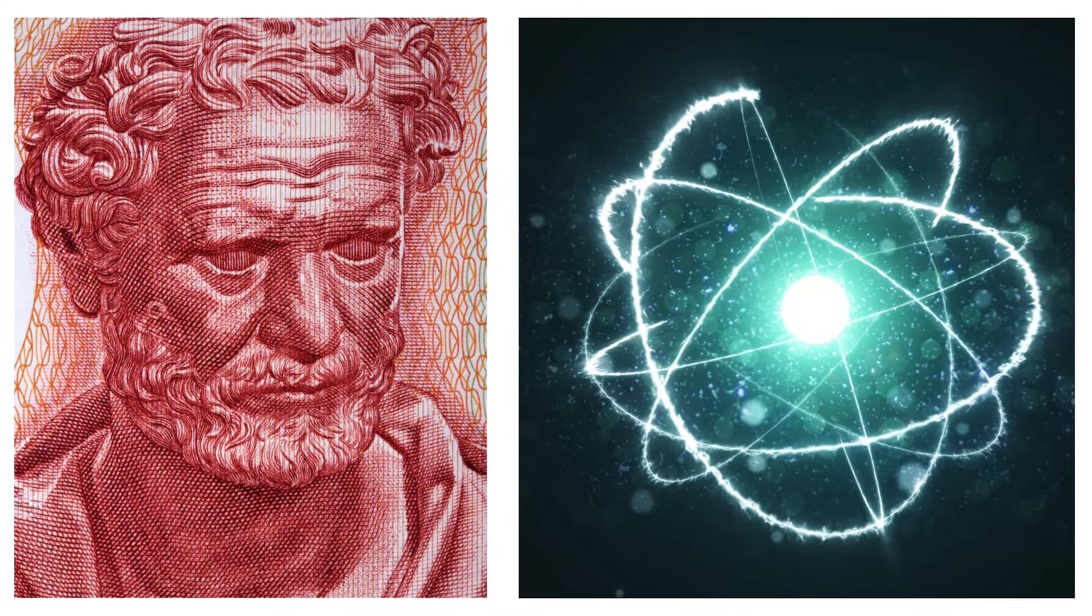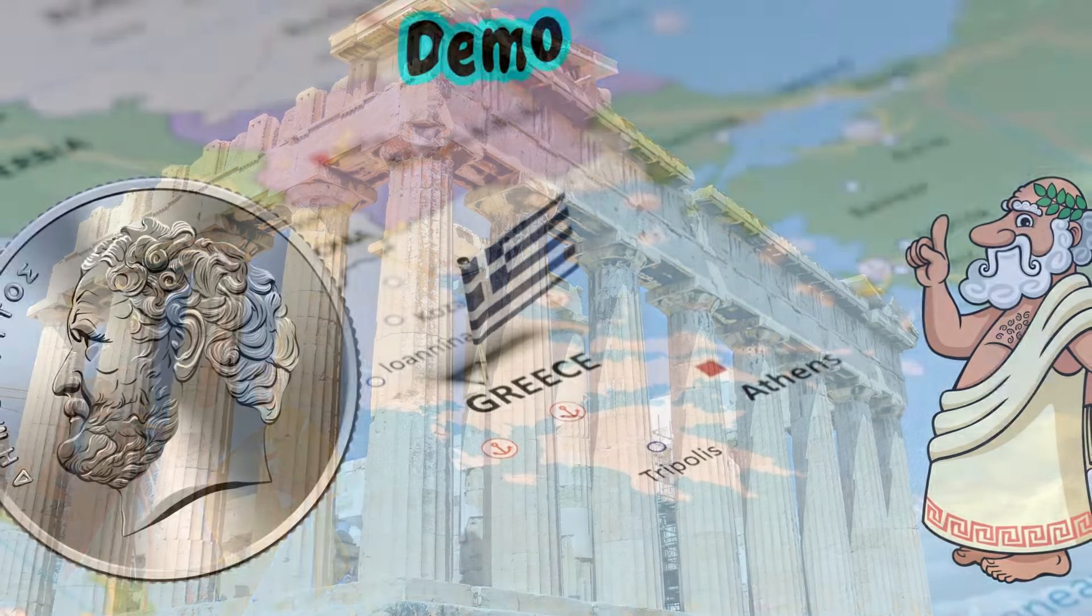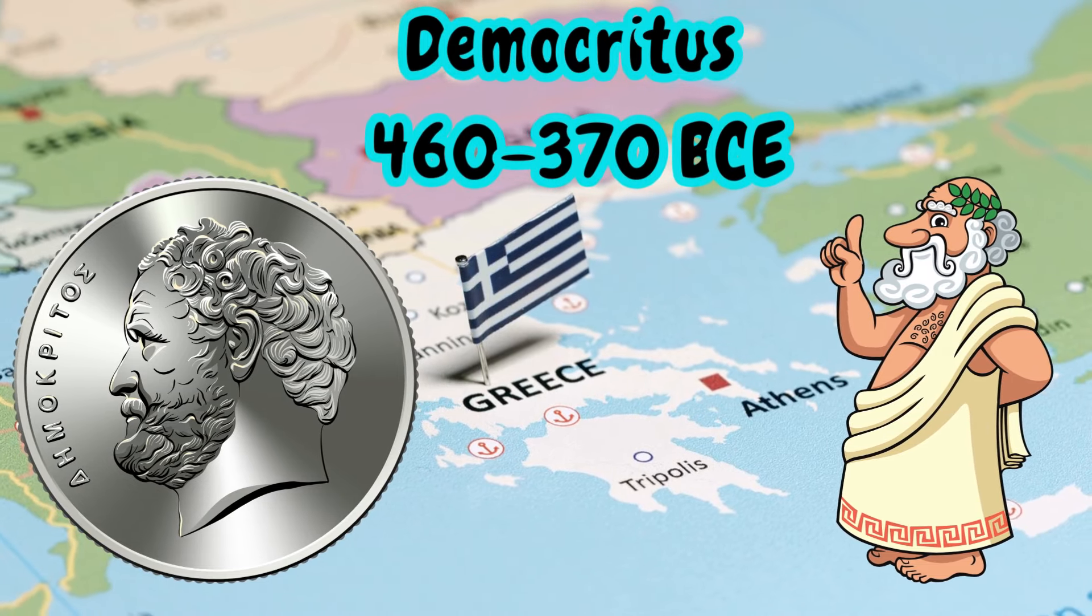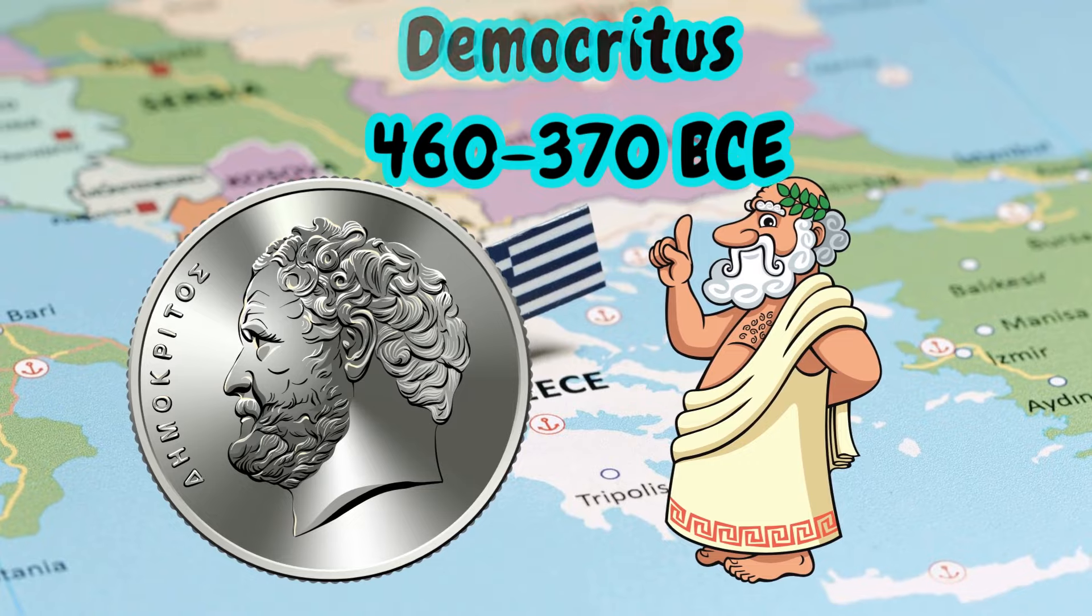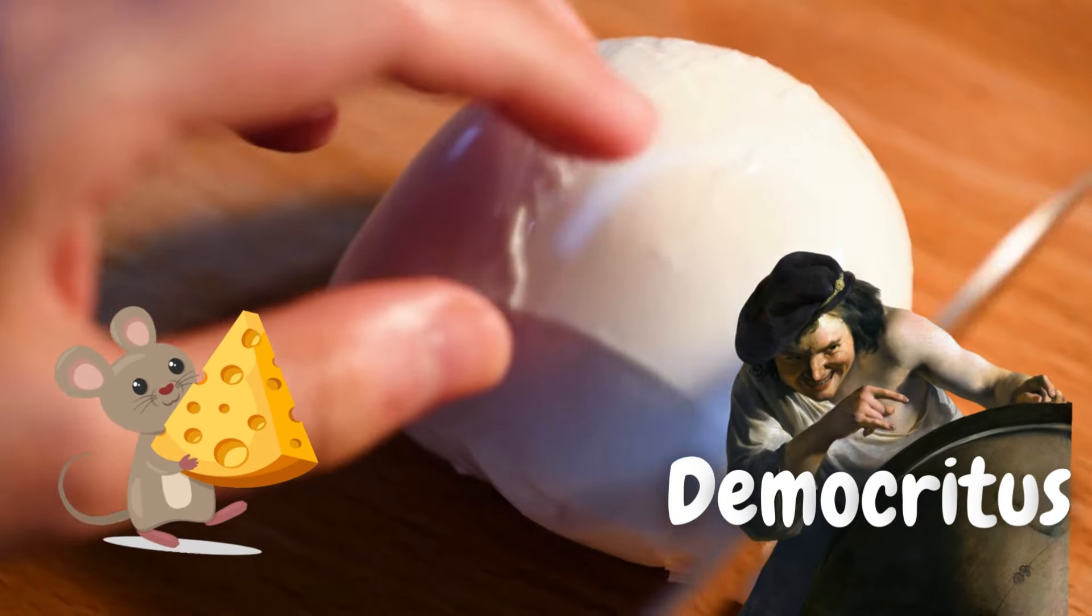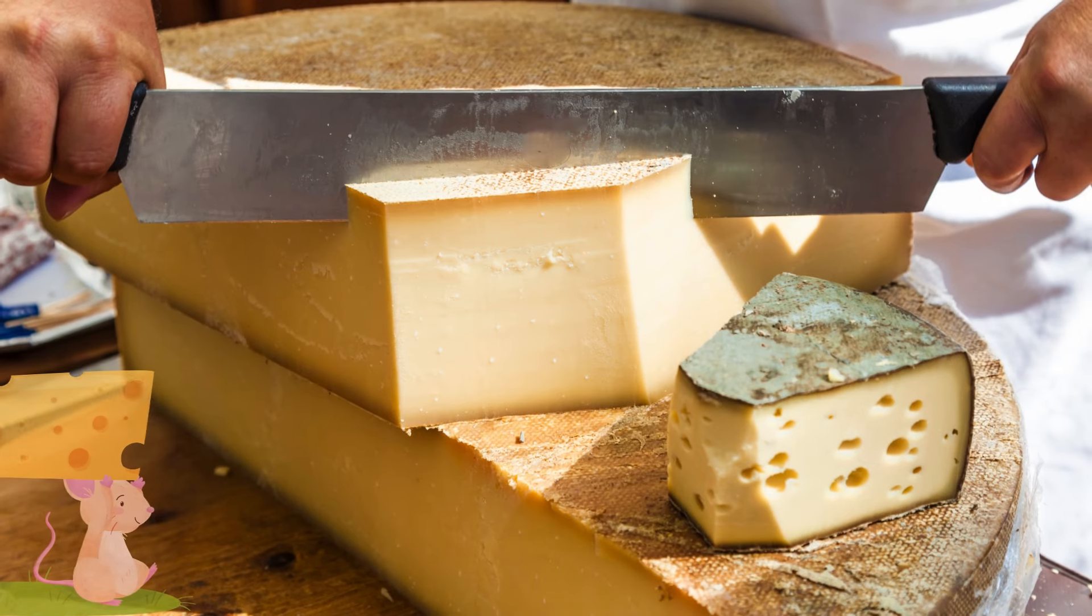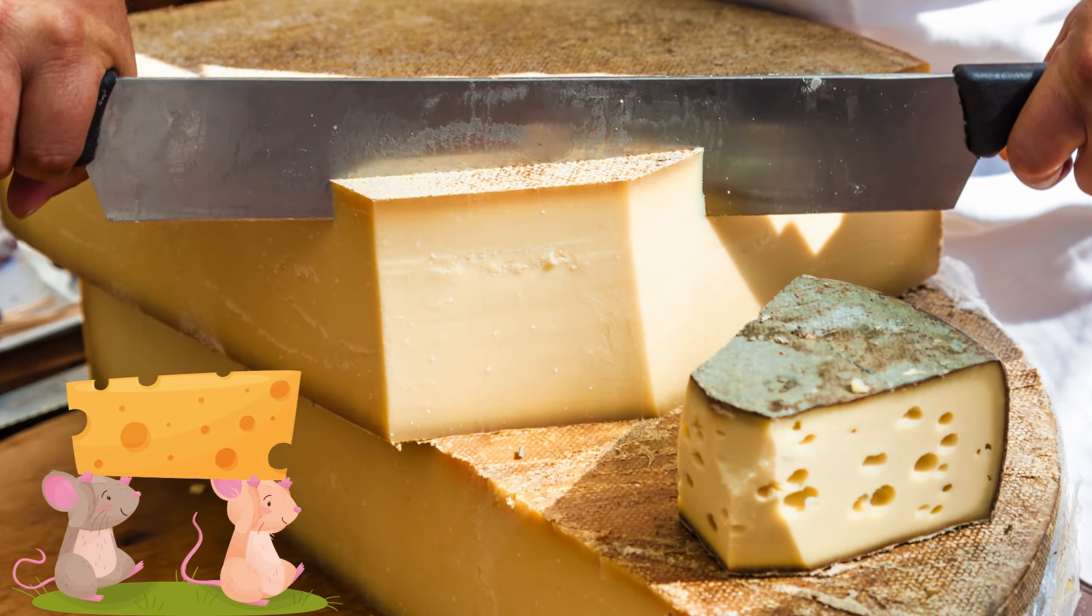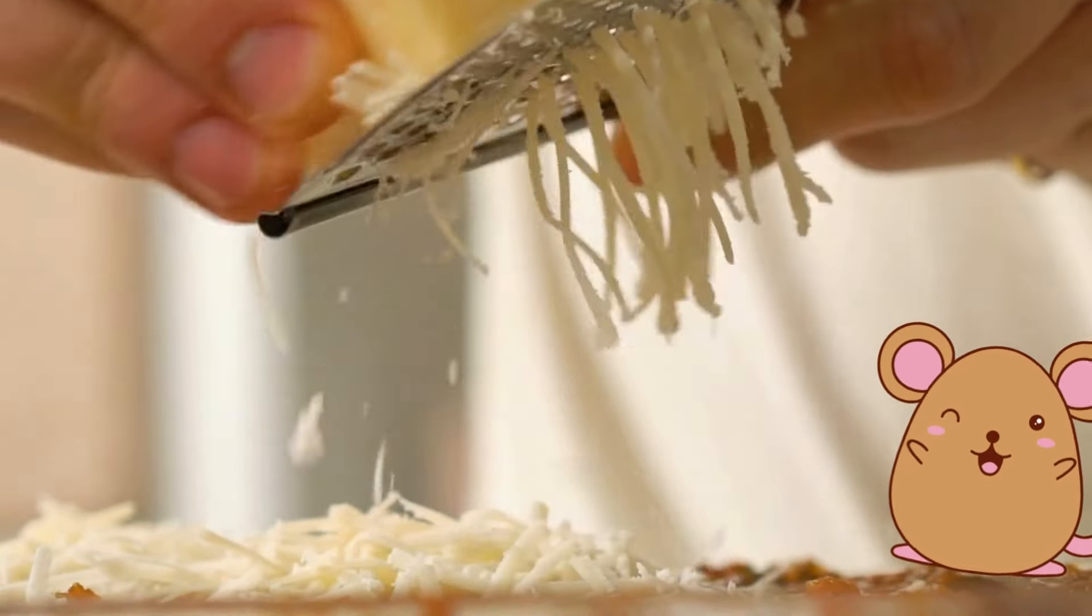Greek model of the atom. Democritus was an ancient Greek philosopher who lived around 460 to 370 BCE. Legend has it that Democritus observed a cook cut a wheel of cheese into smaller pieces. As the cheese was repeatedly sliced, Democritus pondered the existence of tiny uncuttable particles that formed the basis of all matter.